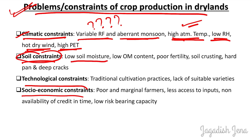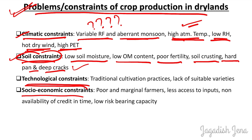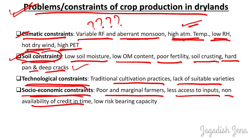Soil constraints in dryland areas include low soil moisture water-holding capacity, low organic matter content, poor fertility, soil crusting, hard pans, and deep cracks. Technological constraints include the use of traditional cultivation practices and lack of suitable varieties — farmers typically grow traditional cultivars rather than hybrids. Socioeconomic constraints include poor and marginal farmers with limited capital, less access to inputs, non-availability of credit in time, and low risk-bearing capacity.